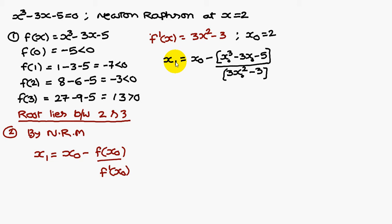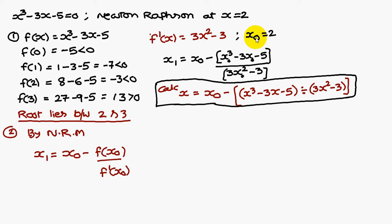Therefore, substitute in the formula x₁ = x₀ - f(x₀)/f'(x₀). f(x₀) means in this equation x is replaced with x₀. If we substitute x₀ = 2 and simplify, you are going to get the value as 2.43.